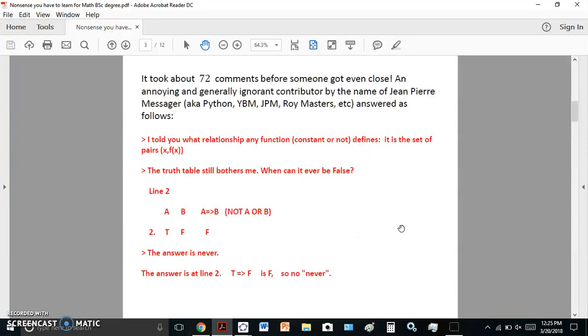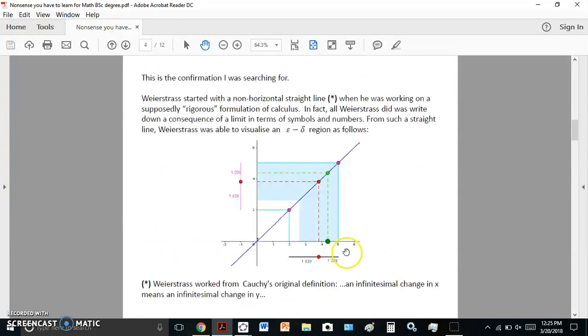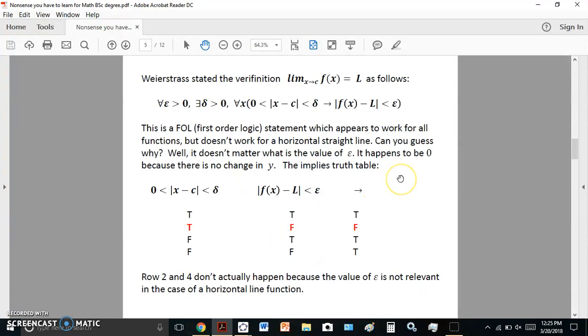Can you guess why? Well, imagine what would happen if Weierstrass just started with a straight line. There wouldn't be anything to map. In other words, there's no epsilon for a straight line. Epsilon is effectively zero. This distance here is zero on a straight line. So it doesn't really work.